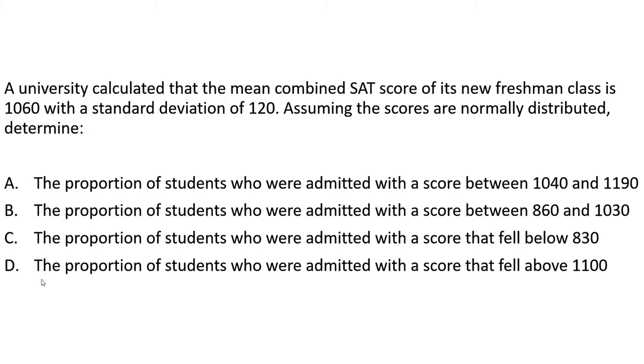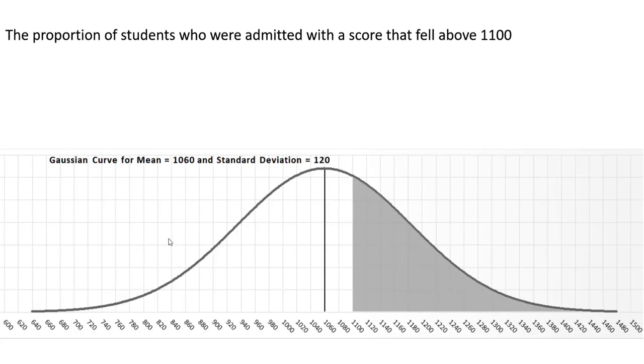Part D wants to know the proportion of students who were admitted with a score that fell above 1100. Now, this is just slightly more difficult than when we say below. You just have to remember a few things. Let's go to the Gaussian curve that represents this. Here we are at the Gaussian curve that represents problem part D, those that have a score that fell above 1100.